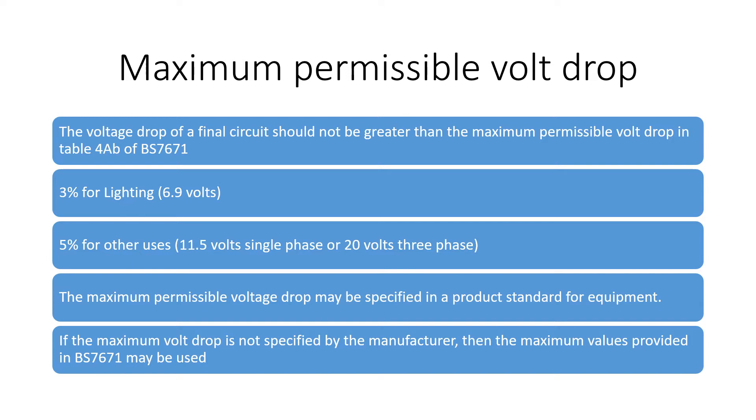Equipment with high inrush currents such as motors may have higher volt drop due to the startup, providing that it's within the limits that's specified by the product's standard or the manufacturer's instructions.